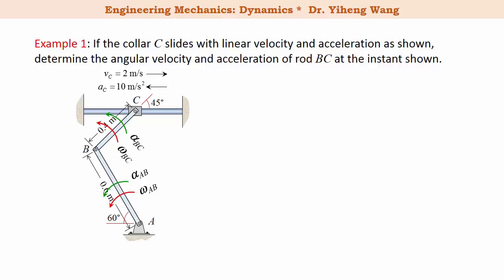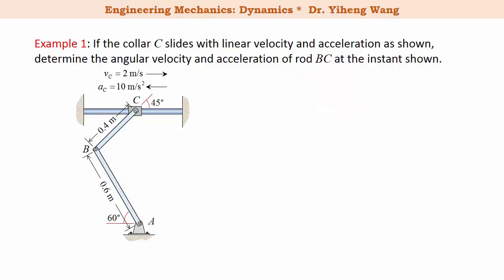Since point B and point C belong to the same rigid body BC, we can apply the two equations relating the linear velocity and linear acceleration of points B and C. These equations contain the unknowns we need to solve for. Since point B also belongs to rod AB, which rotates about a fixed axis through A, we can determine the direction of the velocity of point B — it must be perpendicular to rod AB. Let's set up our x-y coordinate system.